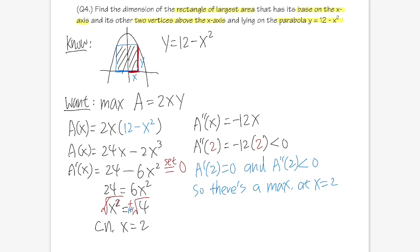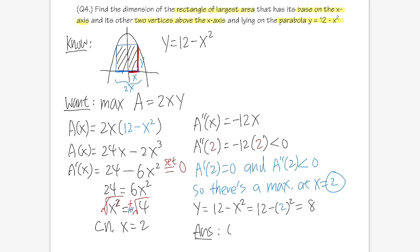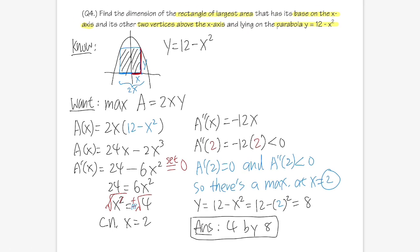Finding y: y = 12 − (2²) = 12 − 4 = 8. The dimension of the rectangle is not 2 by 8 — be careful, because the full base is 2x = 4. The answer is 4 by 8.